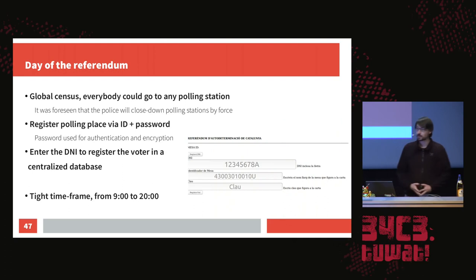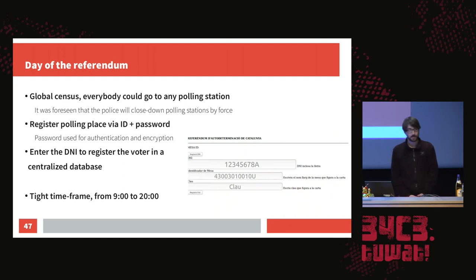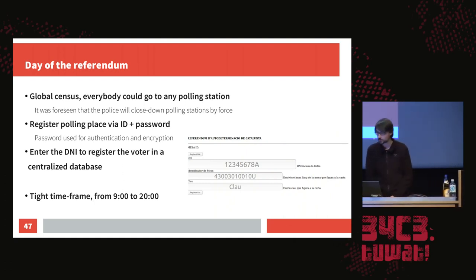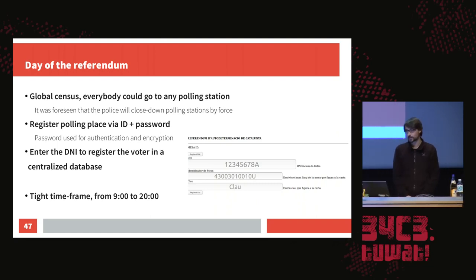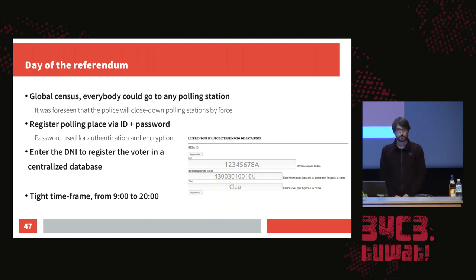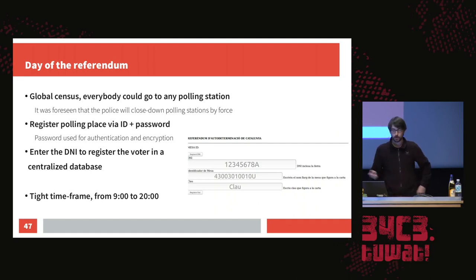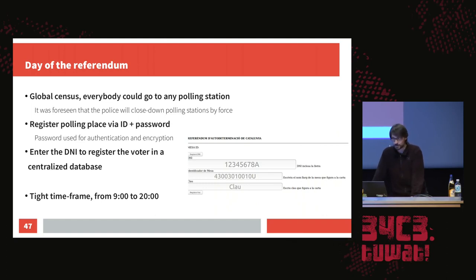At 8 o'clock that morning, a global census was announced by the Catalan government, meaning you didn't need to go to a specific polling station but could go to any polling station. This was done because it was foreseen that police would close down stations by force. In fact, in Barcelona, one of the first polling stations closed down by force was the biggest one in Barcelona. Without a global census, everybody assigned to that station wouldn't be able to vote — this way it was possible.